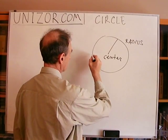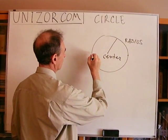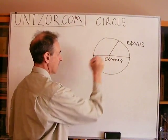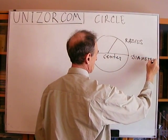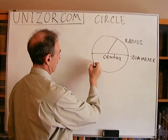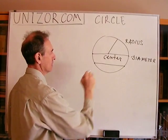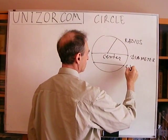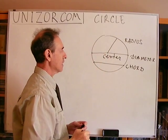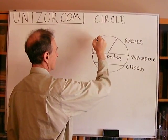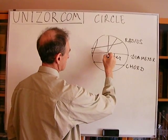Any segment which connects two points on the circle and contains the center is called a diameter. Any segment which connects two points on the circle without the property of containing the center is called a chord. So basically, a diameter is a chord which has the additional property of also containing the center.